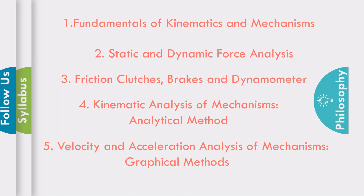In this course, we are going to discuss 5 different topics. The first one is Fundamentals of Kinematics and Mechanisms. In this chapter, we are going to study different types of links, types of joints, what is kinematic chain, what is kinematic pair, what is mechanism, what is machine, and what is degree of freedom — that is mobility of a mechanism. There are also inversions of different mechanisms: 4-bar chain, single slider crank chain, and double slider crank chain.